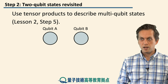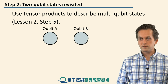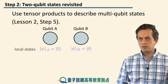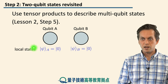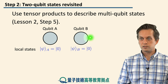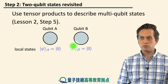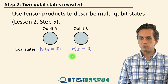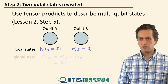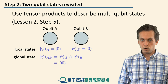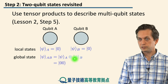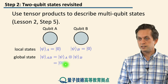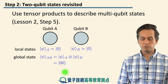For the case of qubit A and qubit B — so two qubits — we have the local state psi A of qubit A, and a local state psi B of qubit B. For concreteness, let's say that they are |0⟩ and |0⟩. In order to write the global state — the state of both qubits — we just form the tensor product, and we call this state psi AB. In this case, it's simply |0,0⟩.